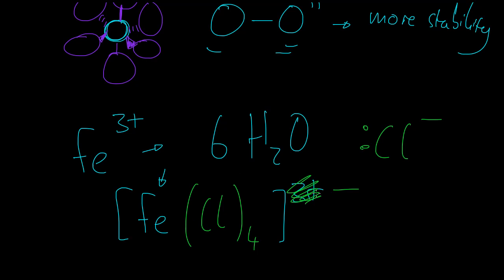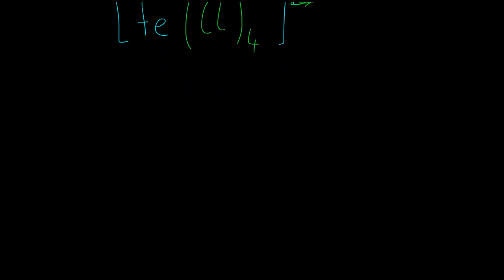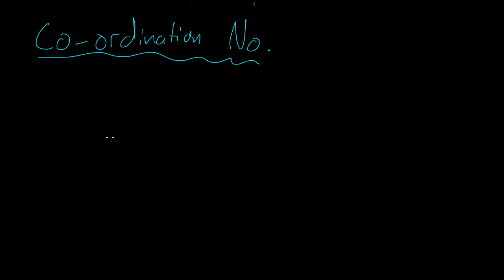There is another thing that you need to know. Along with the charge of the overall complex, there is something called a coordination number. Now, remember that we formed those coordinate bonds. Well, this is to do with that. The coordination number simply states how many ligands are attached to the metal ion that have formed coordinate bonds. So in the example that we just did with the iron, all of the H2Os formed coordinate bonds with the iron. So its coordination number was six.